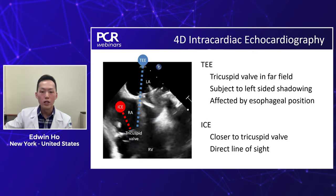Regarding fusion systems: conventional fusion of TEE on fluoroscopy has been available for many years, useful for tricuspid edge-to-edge repair by bringing soft tissue anatomy onto the fluoroscopy screen. In the future, we are excited to see ICE on fluoro as well as TEE on fluoro. Also exciting would be echo and CT fusion — correlating the CT planning that Laura demonstrated with live imaging during a procedure.